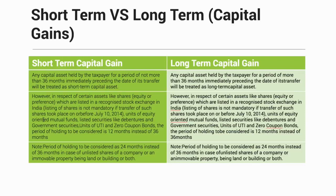For units of equity-oriented mutual funds — meaning mutual funds that are equity-oriented — the minimum holding period is also 12 months for short-term capital gains, with anything beyond that qualifying as long-term capital gains. This is another exception to the general 36-month rule.